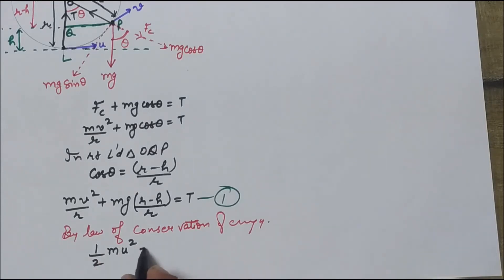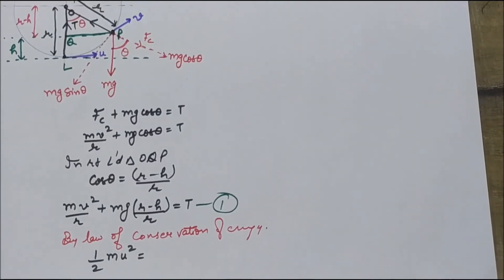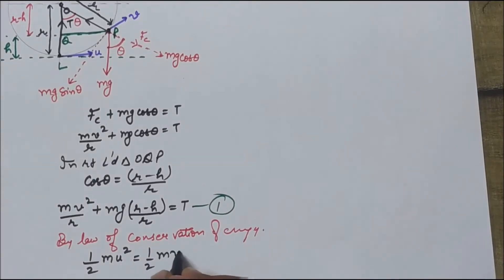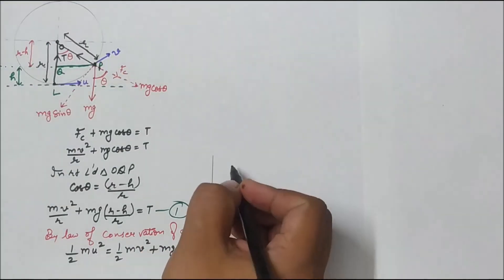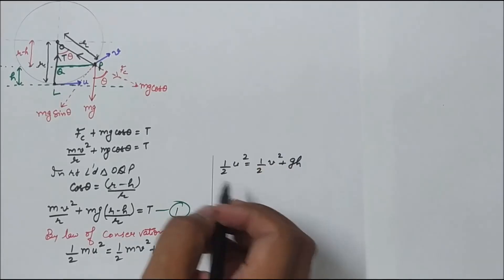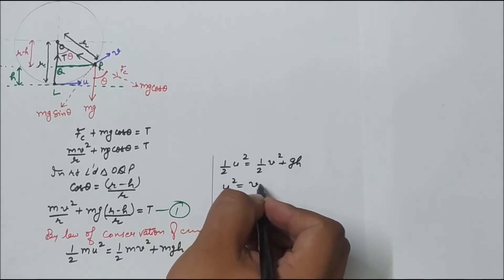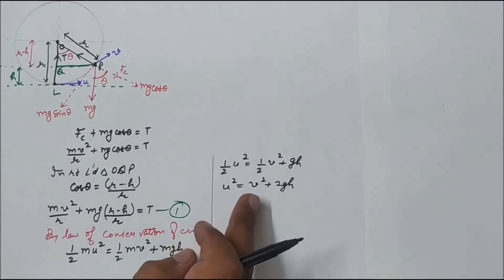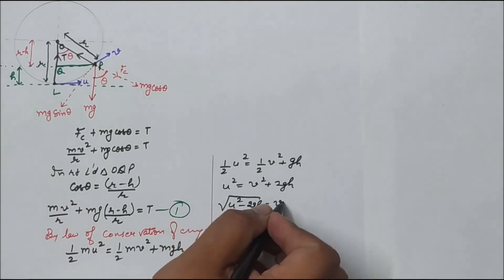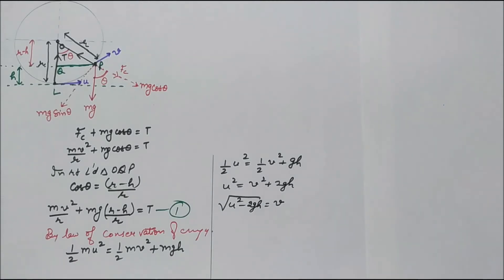So only kinetic energy will be there at L. At point P both kinetic energy and potential energy will be present. The particle is h distance away from the reference line and has velocity v. So the total energy at P is half m v² plus mgh. Cancelling m from both sides gives half u² equals half v² plus gh. Multiplying both sides by 2: u² equals v² plus 2gh.